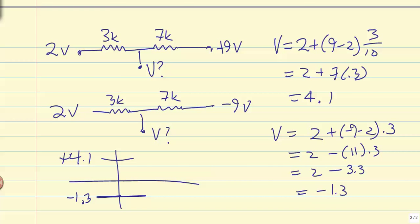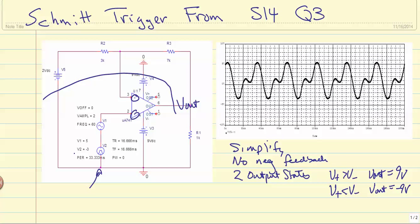If we go back to the diagrams that we had before, we have the two thresholds, which are going to be plus 4.1 and minus 1.3. Now I put the two switching thresholds on the diagram at the upper right.